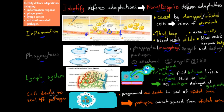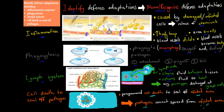The last defense adaptation is cell death to seal off pathogens. If an infection is too severe to stop by normal means, white blood cells can surround the infected area and then kill themselves — this is programmed cell death — to seal off the infected area. Once that happens, the pathogens cannot escape. Eventually when the cells die, the pathogens die as well, stopping a severe infection from causing any more problems.